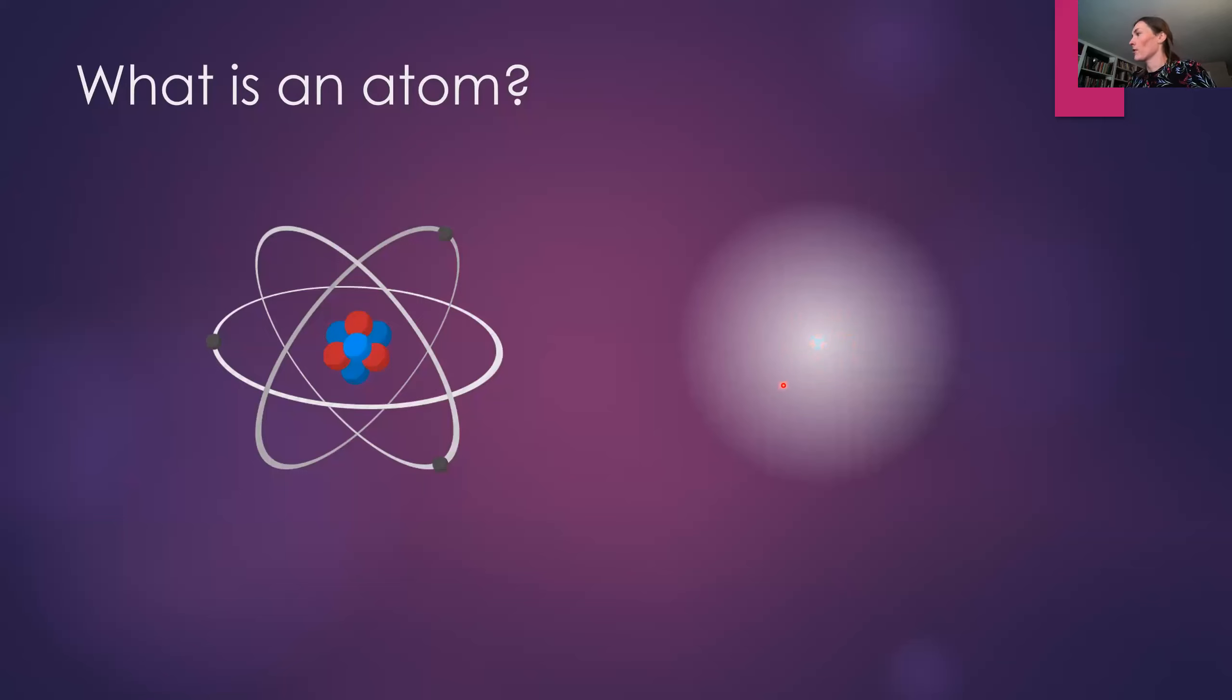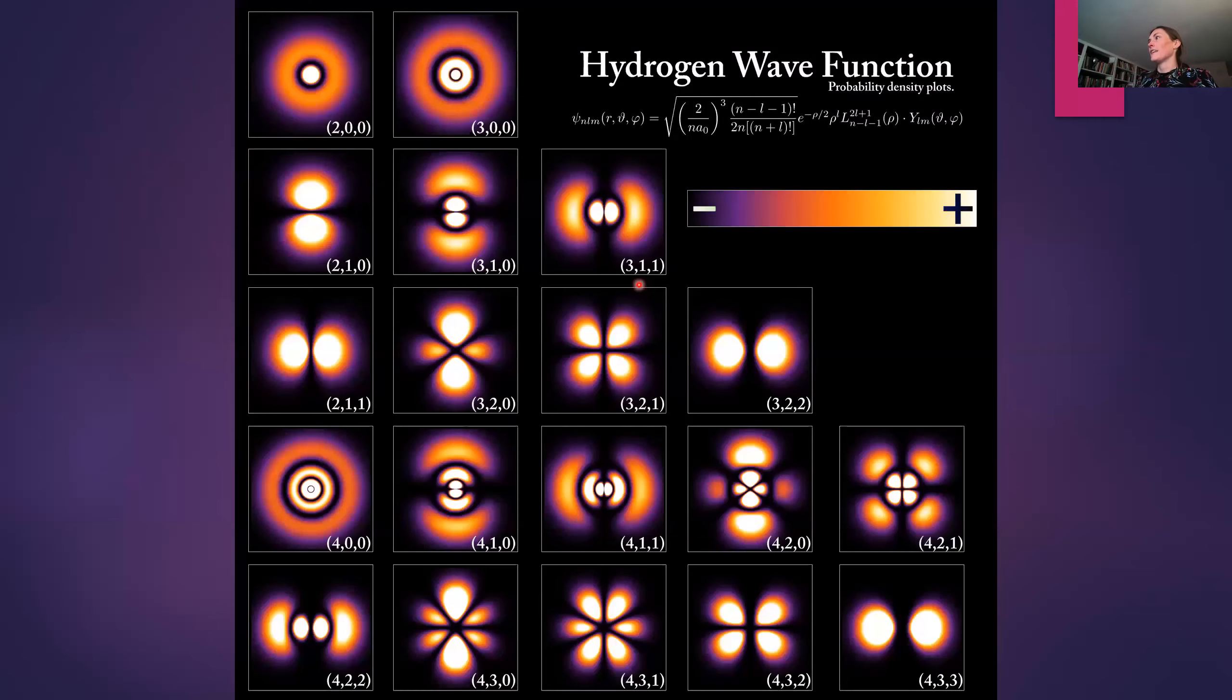The electron in this image is more likely to be found near the nucleus and less likely to be found where this cloud fades away. So the cloud is really representing the probability distribution of where you might find an electron if you went and measured its position. And that gives us the idea and those calculations that go into figuring that out give us the wave functions and the orbitals that we're familiar with from chemistry.